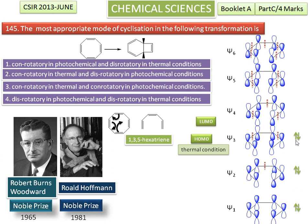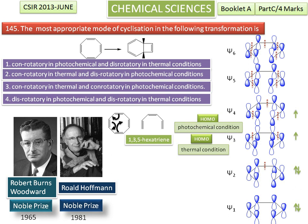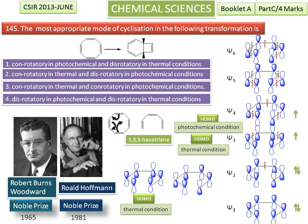When an electron is promoted by absorption of light from Ψ3 to Ψ4, Ψ4 becomes the HOMO — the highest occupied molecular orbital — in photochemical conditions. So Ψ3 is HOMO in thermal conditions, and Ψ4 is HOMO in photochemical conditions.